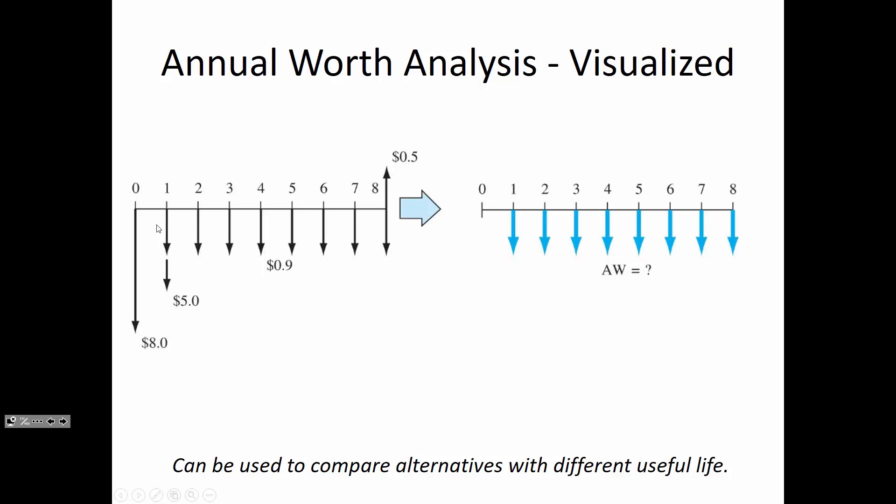For the 5 million in year one, it's a two-step process: move it to year zero first, then spread it out over the entire eight-year lifespan using A/P. Alternatively, you could move it to year eight using F/P with N equals seven, combine it with the 0.5 million salvage, and then spread that out over the annual series using A/F — though that approach is more awkward.